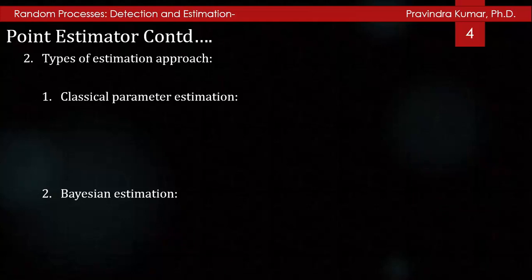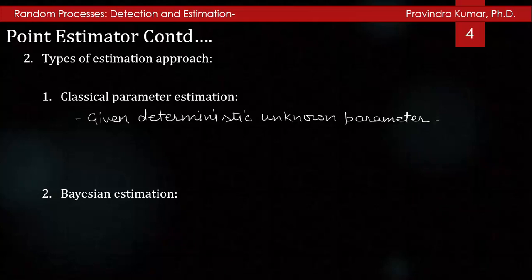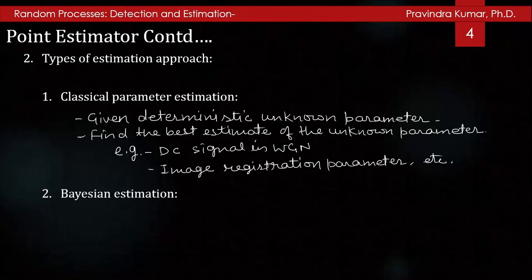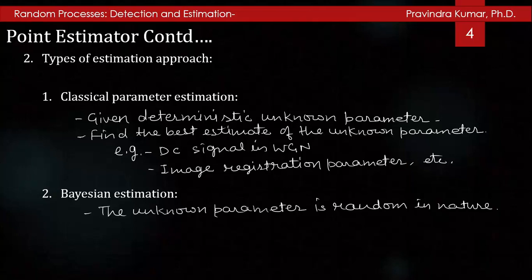In classical parameter estimation, given a set of observations and an assumed probabilistic model, you have a deterministic unknown parameter and must find the best estimate of that parameter — for example, a DC signal in white Gaussian noise or image registration parameters. In Bayesian estimation, the unknown parameter is random in nature and you have to estimate it.